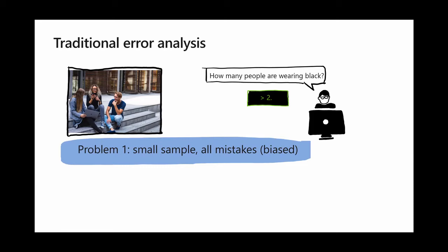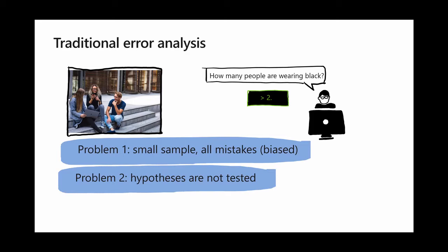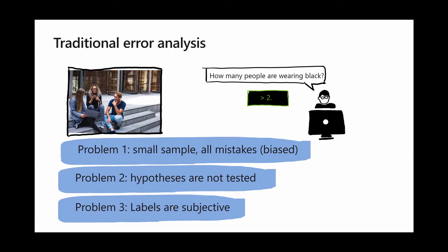The problem with this traditional error analysis approach is that you take a small sample and only look at mistakes, so it's biased. Maybe you look at a few mistakes and think the model is terrible at counting, but actually there are a ton of counting questions and the model is pretty good. Also, you don't really test the hypothesis — I listed five hypotheses for two instances and didn't verify any of them. And the labels are subjective: what's a large quantity? More than two, five, or ten? It's hard to compare analysis from one to another.